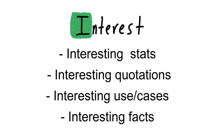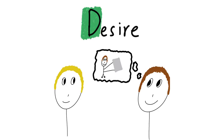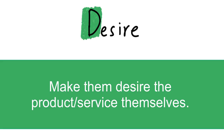So you're trying to give them interesting stats, interesting quotations, interesting use cases, and interesting facts in this section. Now let's get to the desire section — this is one of the most commonly confused sections because sometimes it blends in with the interest a little bit. What you want to do is make them desire the product or service themselves, meaning internally they just really, really want it. You need to show them how life will be better with your product or service.